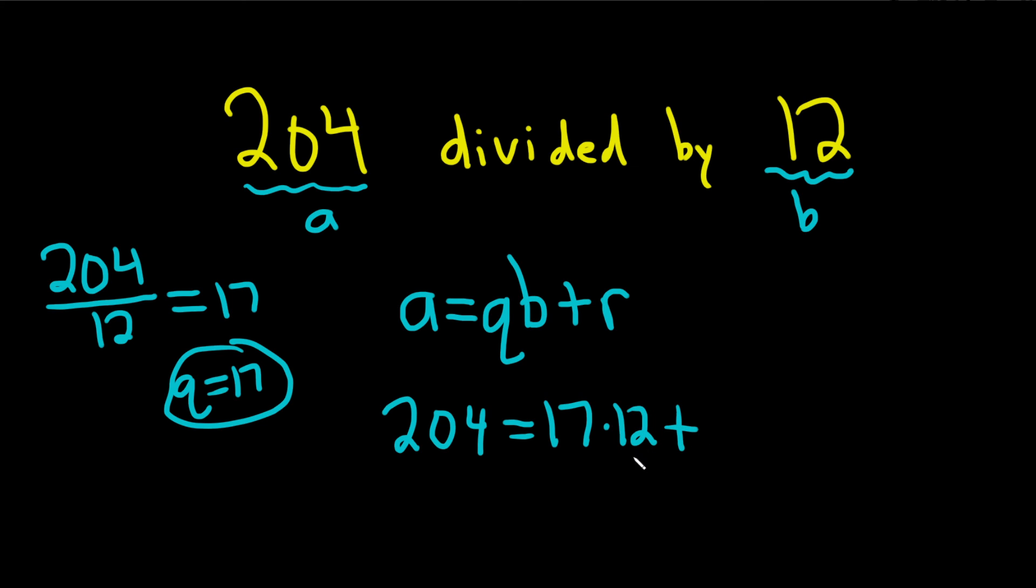Plus... if you work out 17 times 12, you'll get 204. So that means R must be zero. So the remainder is zero.